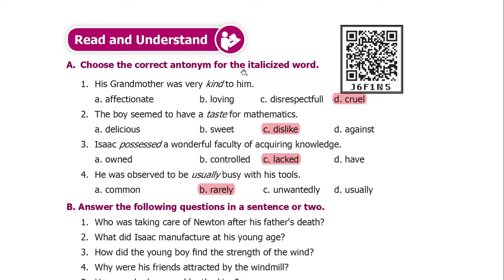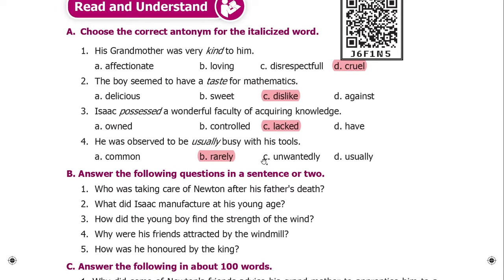Section 2. Choose the correct antonym for the italicized word. His grandmother was very kind to him — opposite of 'kind' is 'cruel'. The boy seemed to have a taste for mathematics — opposite of 'taste' is 'dislike'. Isaac possessed a wonderful faculty of acquiring knowledge — opposite of 'possessed' is 'lacked'. He was observed to be usually busy with his tools — opposite of 'usually' is 'rarely'.